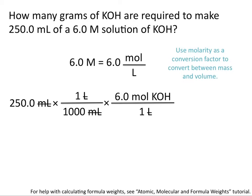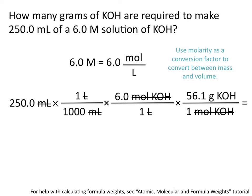If we were to stop this problem now, we would have an answer in moles of potassium hydroxide. But our question is asking us for how many grams of potassium hydroxide. And so we need to convert from moles to grams using the molar mass of potassium hydroxide, which is 56.1 grams per mole. This allows us to cancel out the units of moles, and gives us a final answer of 84 grams of potassium hydroxide.